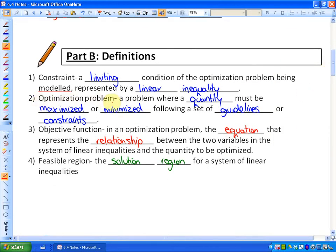Secondly, an optimization problem is basically what we're going to get into. It's a problem where some quantity must be maximized or minimized by following a set of guidelines or constraints. And finally, the objective function will be in an optimization problem. It's an equation that represents the relationship between the two variables in the system and the quantity to be optimized.